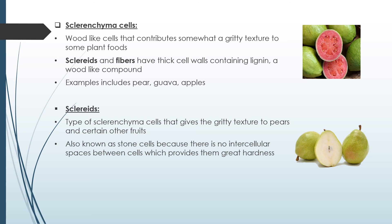Sclerenchyma cells are wood-like cells that contribute a gritty texture to some plant foods. They have thick cell walls containing lignin, a wood-like compound. Examples include pear, guava, and apple — the grittiness in their texture is due to these cells. Scleroids are a type of sclerenchyma cell that give a gritty texture to pears and certain other fruits. Also known as stone cells, they have no intercellular spaces between cells, which gives them great strength.